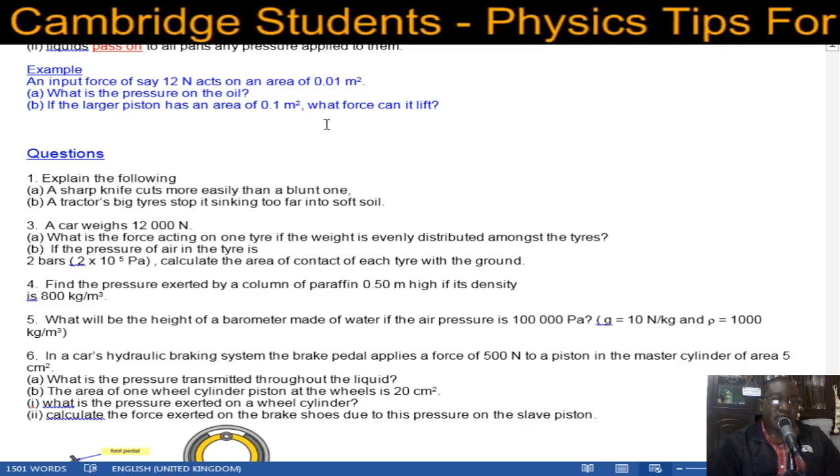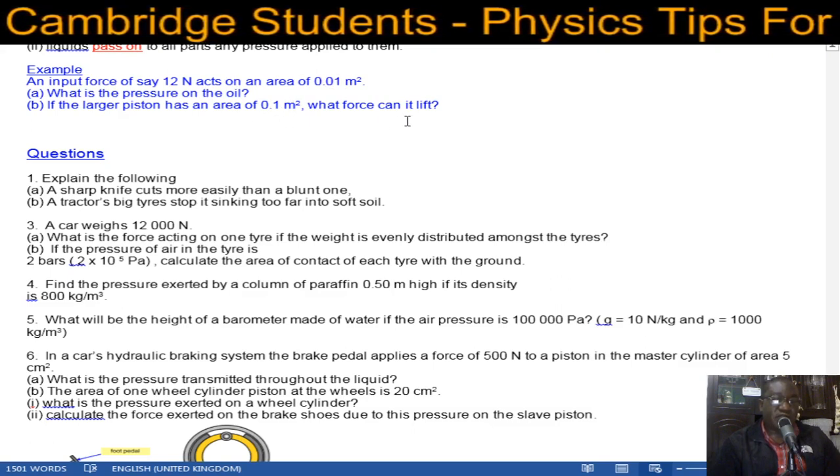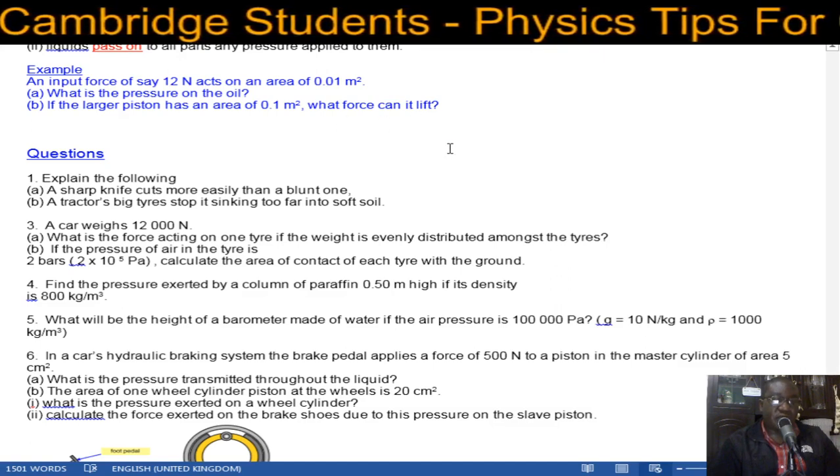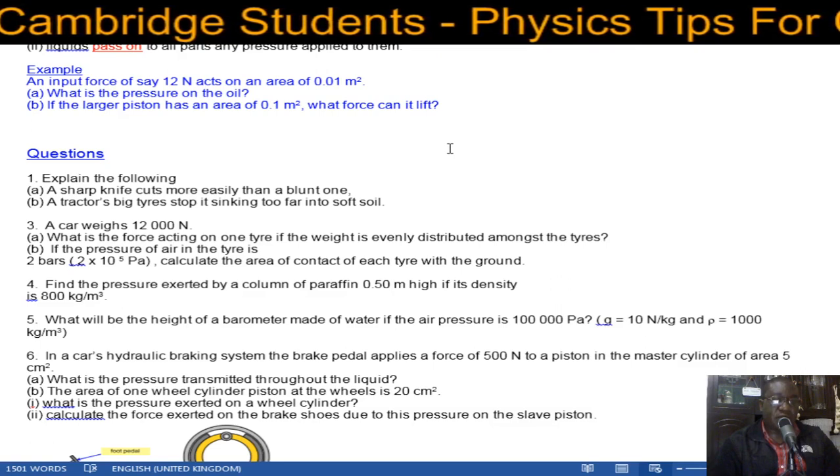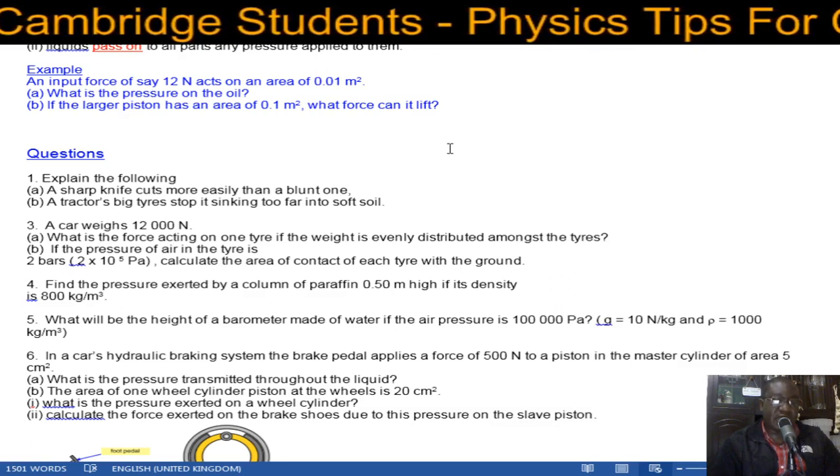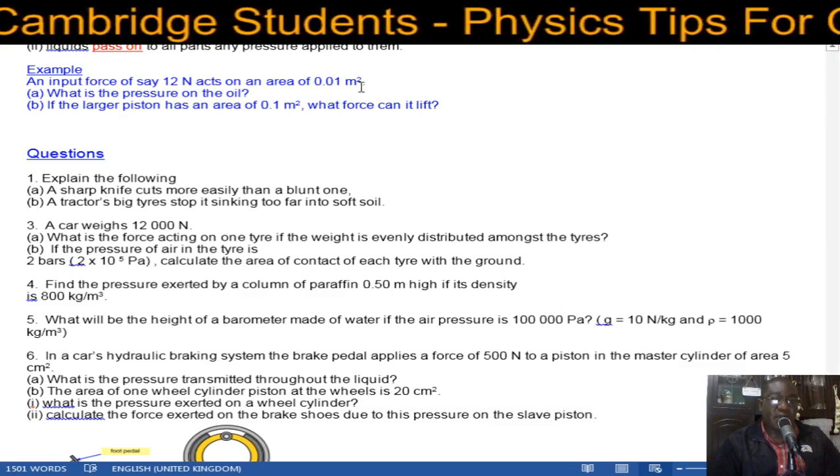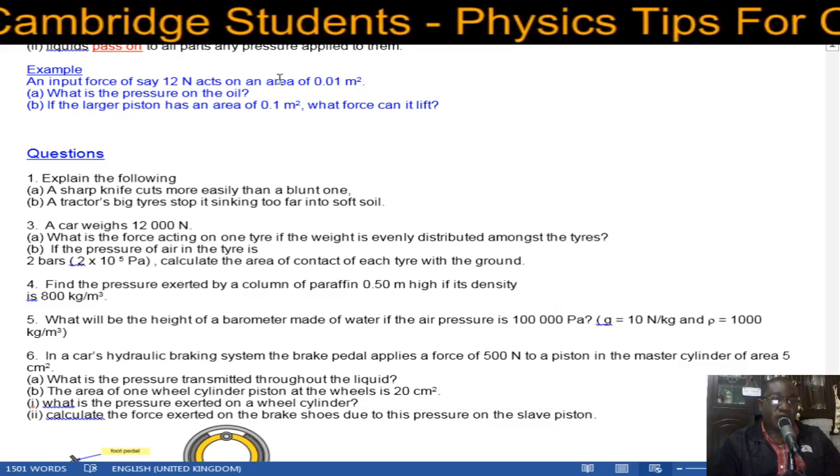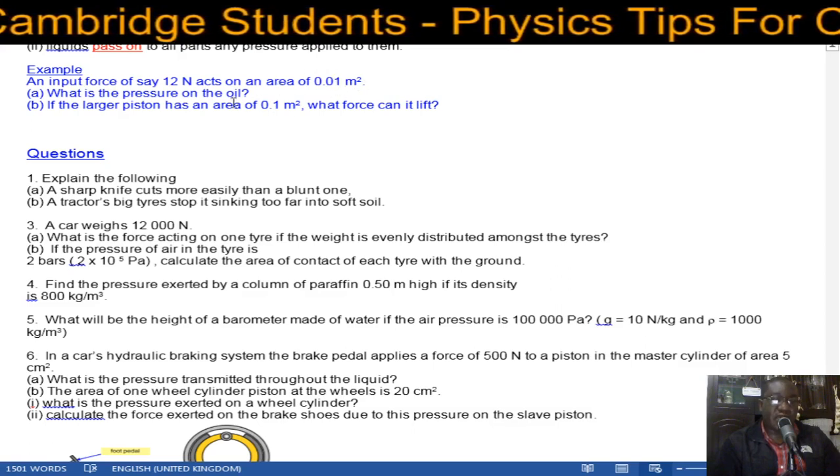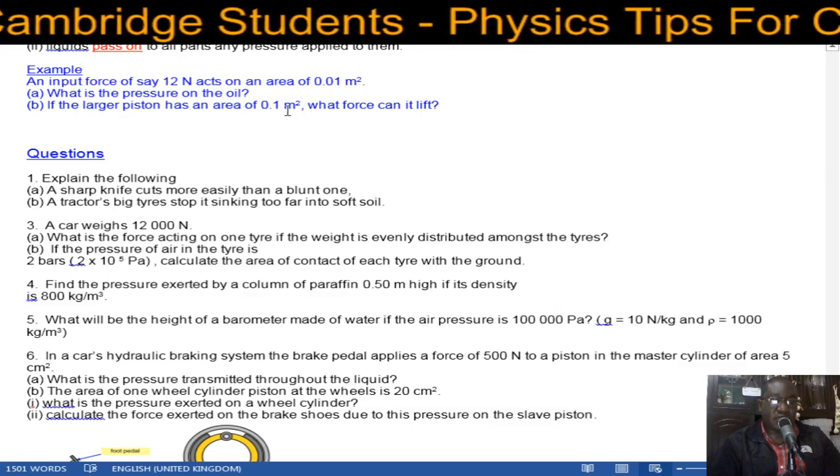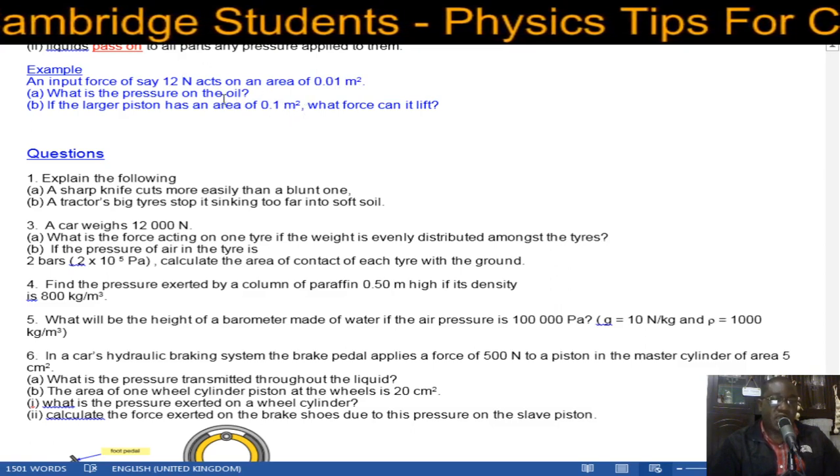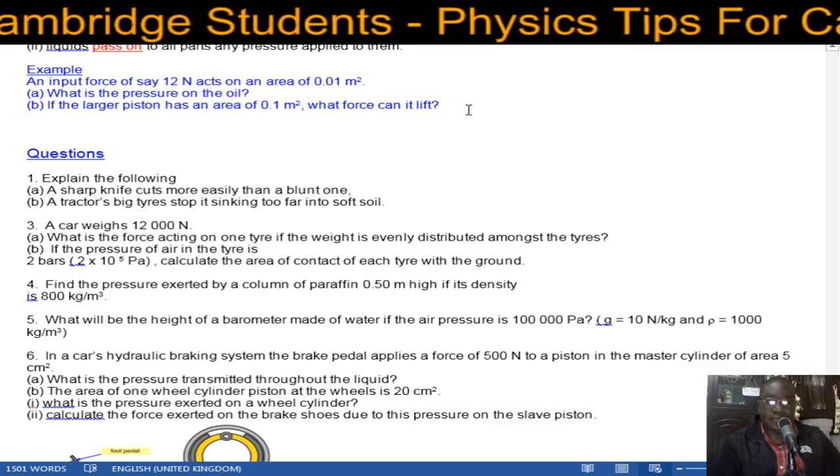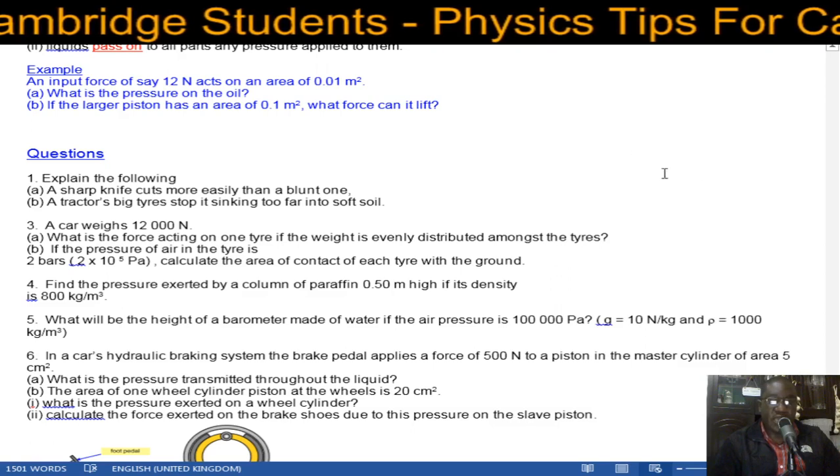If the larger piston has an area of 0.01 square meters, what force can it lift? Remember we said the hydraulic jack works with the principle that liquids are incompressible, which means they pass on whatever pressure they have. So the pressure that has been produced at the small piston (the piston with a small cross-sectional area) will be the same pressure as the one on the large piston. So whatever pressure you've calculated, you multiply by the area to get the force that can be lifted. I'll do some problems on that.